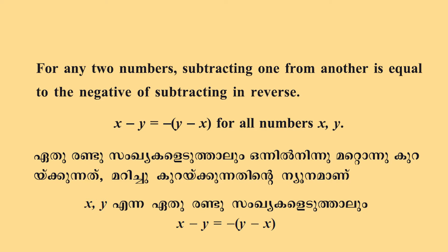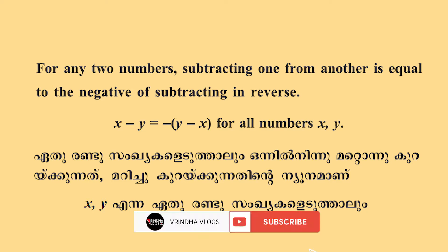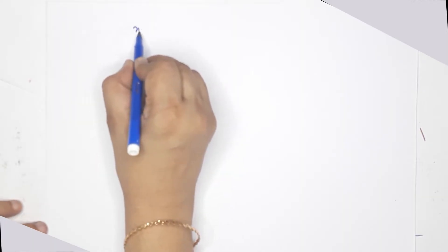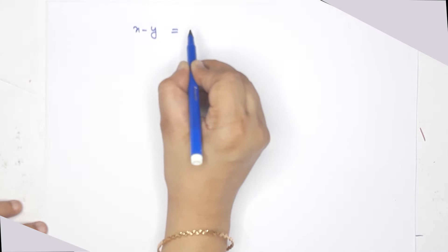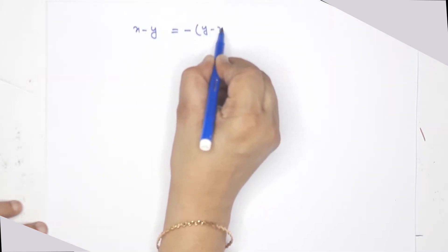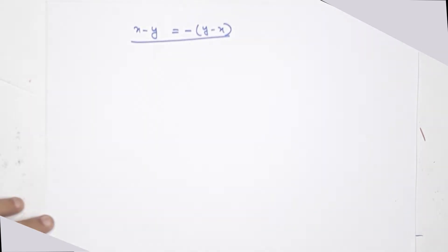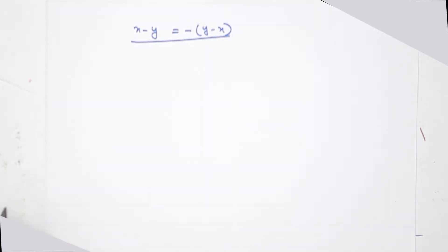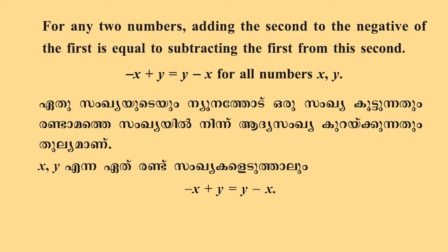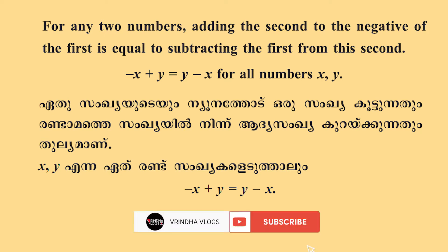For any two numbers, subtracting one from another is equal to the negative of subtracting in reverse. That is: x minus y is equal to minus of y minus x.